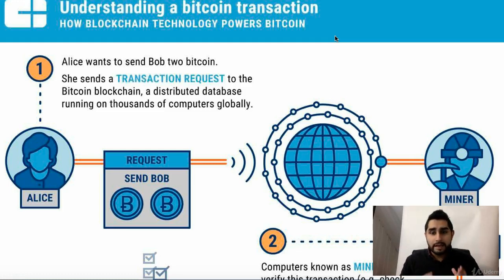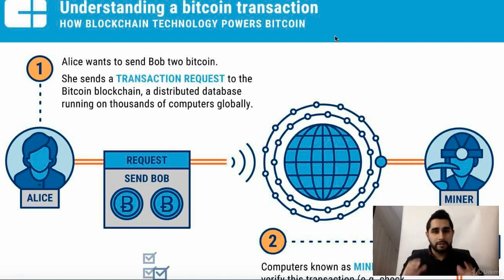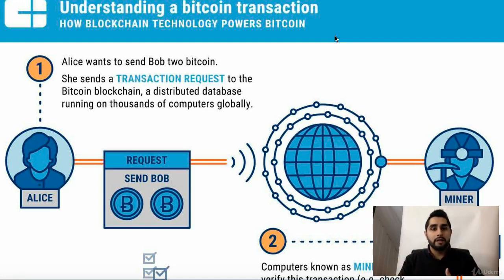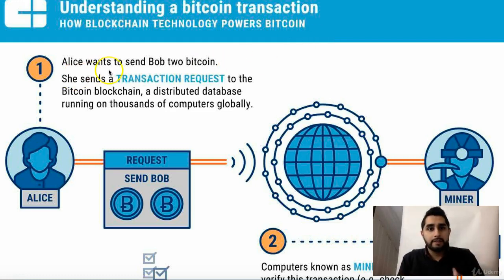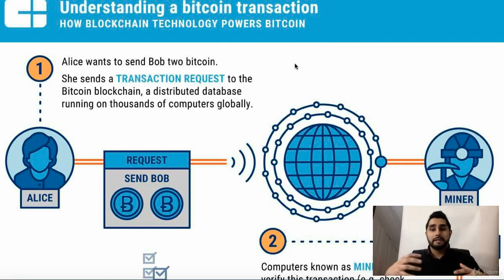So let's dive right into how a Bitcoin transaction works and what are the different steps involved. This will really give you an overarching concept of what Bitcoin is. So let's start off — Alice sends Bitcoin to Bob. Bitcoin is like a medium of exchange; it's a digital asset.